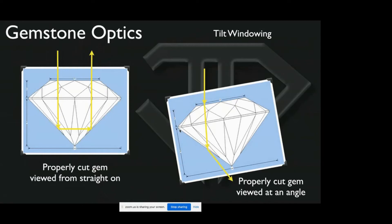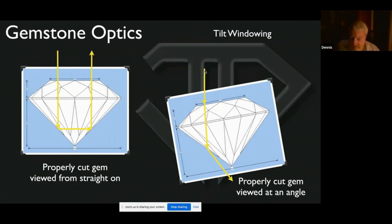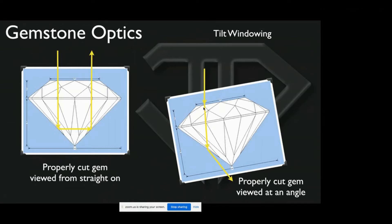Tilting the gem effectively reduces the angle of one side and increases the angle of the other in relationship to the viewer. So that causes what we call tilt windowing. Tilt windowing is something that cannot be completely avoided in cut gemstones, and some people confuse tilt windowing with regular windowing.